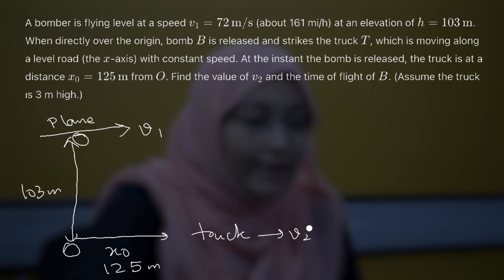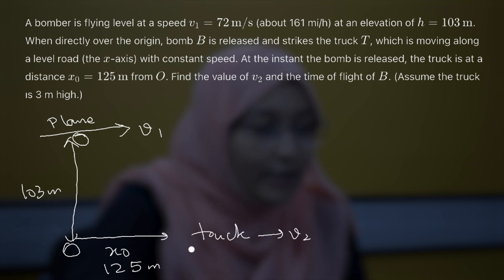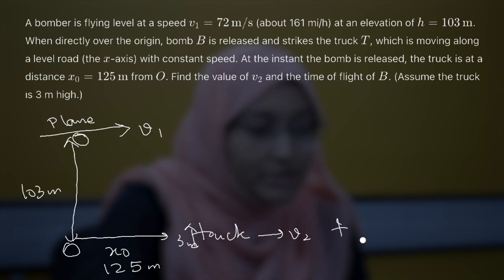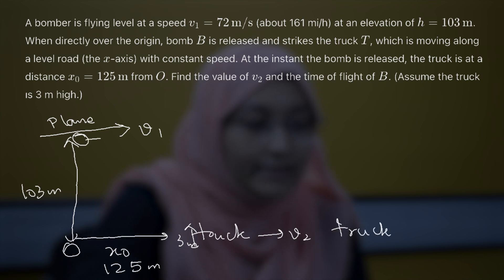This is our truck and it is moving with a velocity of V2. We have to find the value of V2. The height of the truck is given as 3 meters. After moving with velocity V2, it reaches another point where the bomb strikes the truck.